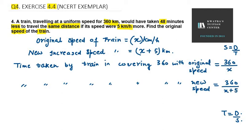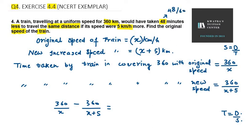It says the train would have taken 48 minutes less to travel the same distance, so we write: 360 over x minus 360 over x plus 5 equals 48 over 60, converting minutes to hours.